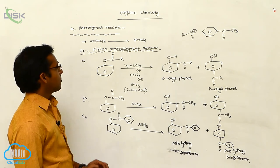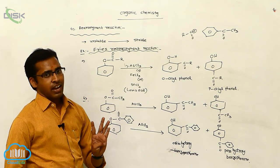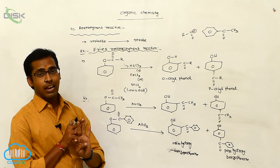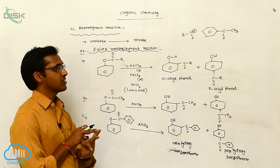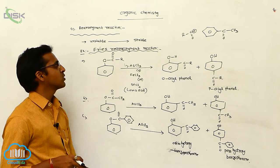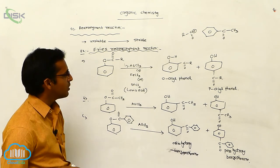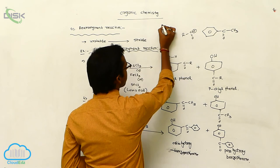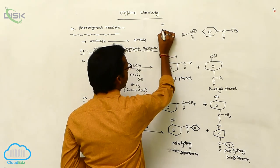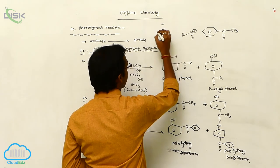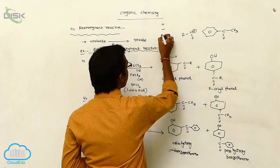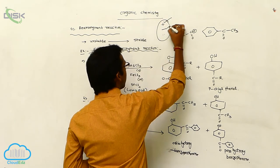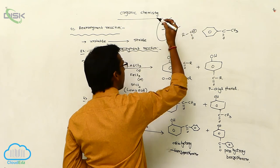Organic molecules participate in four types of reactions: Addition, Substitution, Elimination, and Rearrangement reactions. Through rearrangement reactions, different types of intermediates are formed. These intermediates are: carbocation (positive charge), carbanion (negative charge), and sometimes free radicals are also formed.